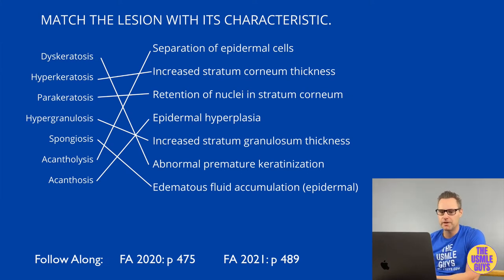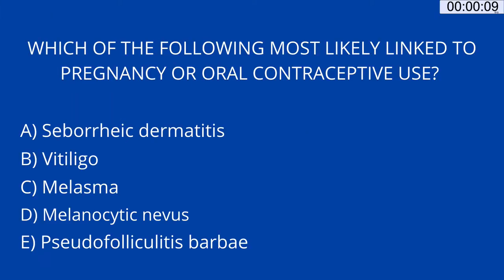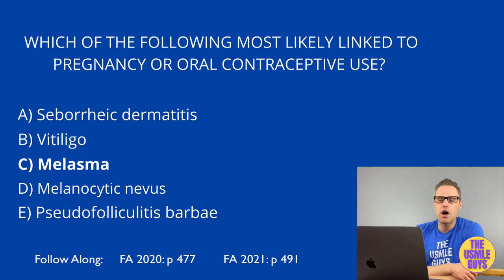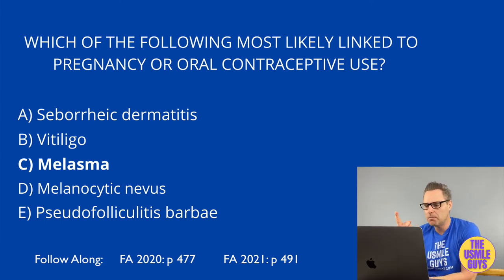Let's move on to our next question — a multiple choice question. The correct answer here is C, melasma. Let's take a look at three commonly tested pigmented skin disorders: albinism, melasma, and vitiligo. We'll also touch on a few other conditions listed as distractors: seborrheic dermatitis, melanocytic nevus, and pseudofolliculitis barbae.